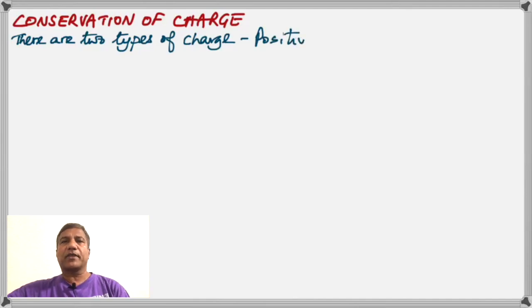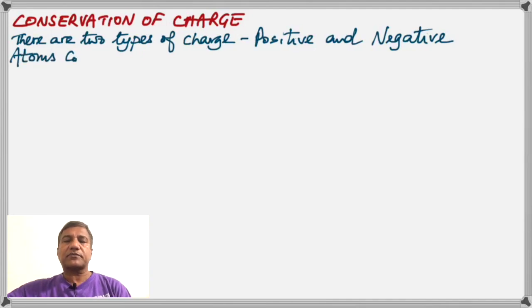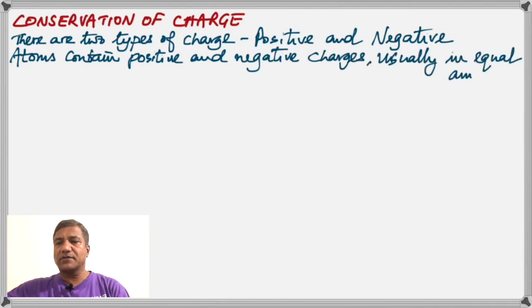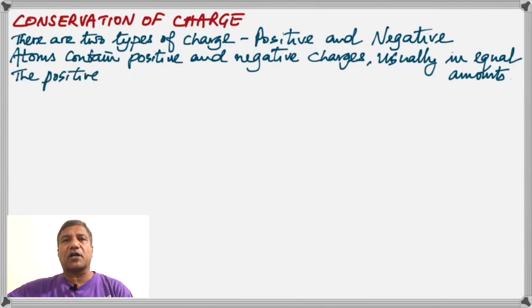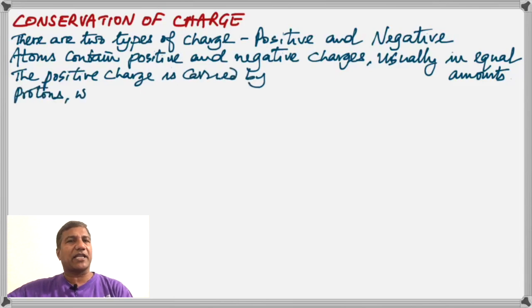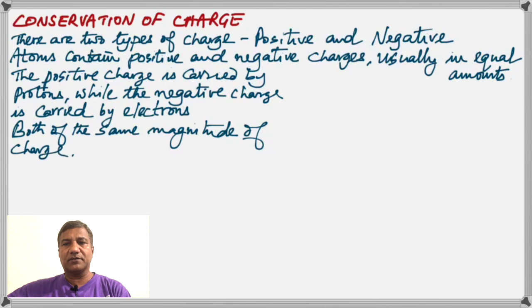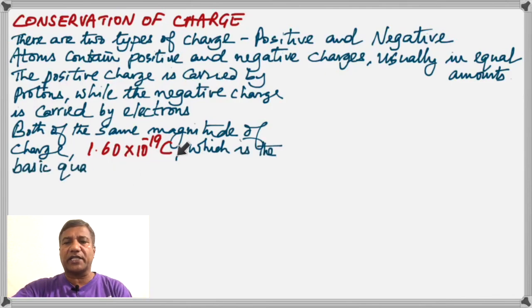There are two types of charges: one is positive, the other is negative. Electrons are negatively charged and protons are positively charged. Atoms contain both positive and negative charges, usually in equal amounts, so the number of protons equals the number of electrons. The positive charge is carried by the proton, while the negative charge is carried by electrons. The charges on the proton and the electron are equal in magnitude but opposite in sign.